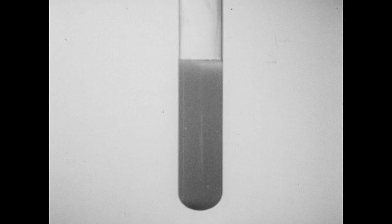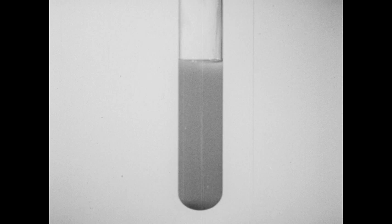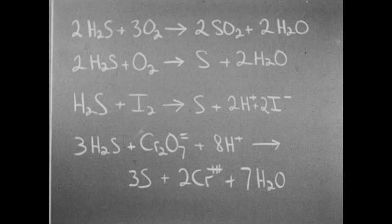You should notice that the orange color of the potassium dichromate solution has changed to green. This greenish color is characteristic of the chromium three-plus ion. You should also notice that the solution has become milky. This milky appearance is due to the presence of millions of tiny particles of elementary sulfur, which have been formed as the hydrogen sulfide was oxidized by the dichromate.